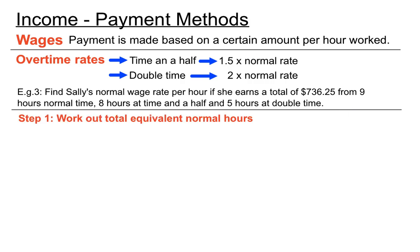What we have to do is, step one is to work out a total equivalent normal hours and I'll explain that as we go here. Okay, so nine hours at normal time, this section here in the question, nine hours normal time. We don't have to make any adjustment there because they're just normal hours anyway. So that's nine hours of normal time. And so that's equivalent to nine normal hours, no big deal there.